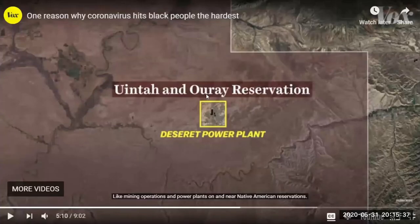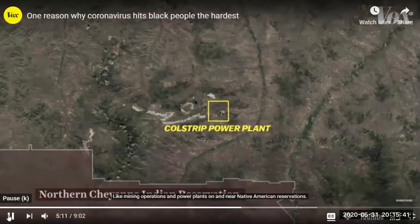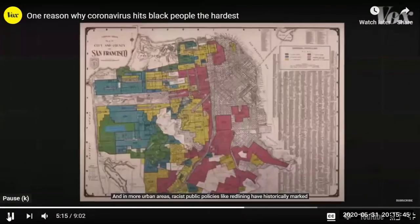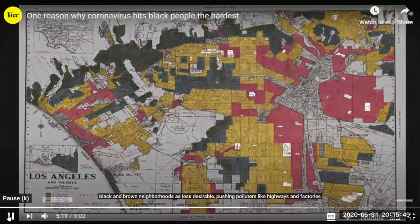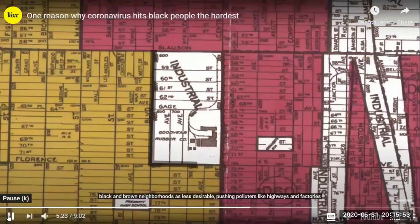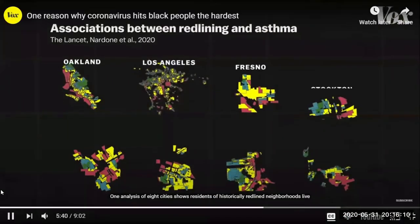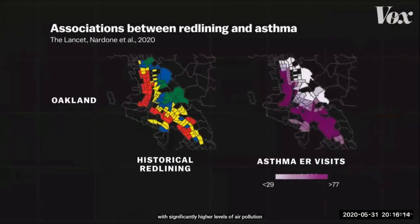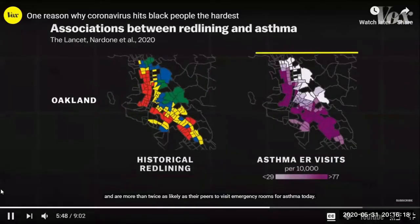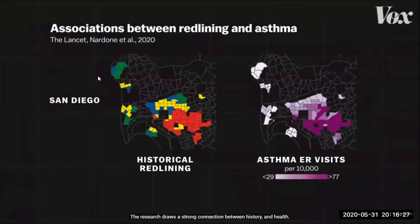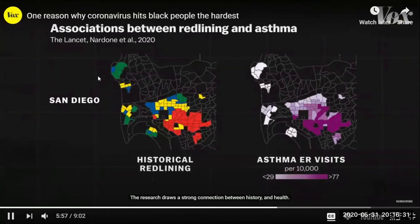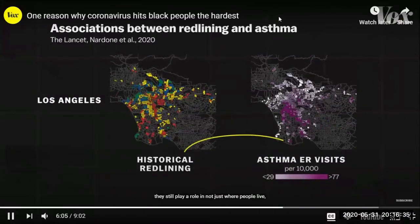Here's a story that is eye-opening. Near Native American reservations and in more urban areas, racist public policies like redlining have historically marked black and brown neighborhoods as less desirable, pushing polluters like highways and factories closer to their homes. Zip code is still the most potent predictor of health and well-being — you tell me your zip code, I can tell you how healthy you are and what's in your neighborhood.